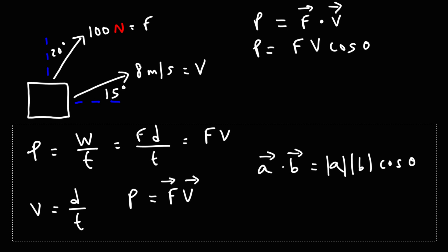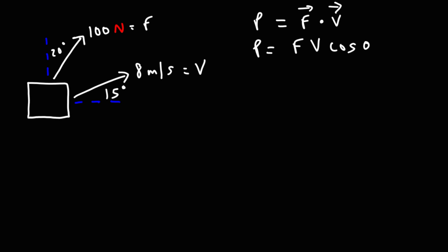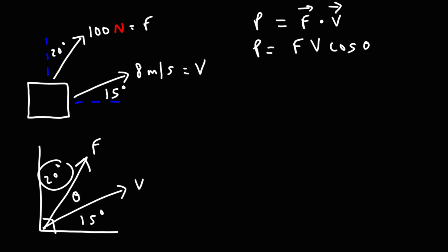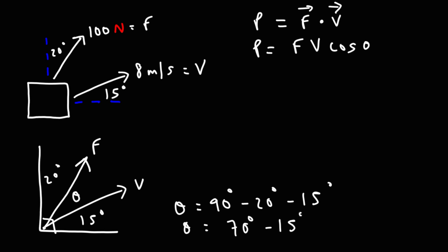We have the magnitudes of F and v, so we need to determine the angle between the two vectors. Here we have the horizontal and the vertical, which meet at right angles. The force vector is at 20 degrees from the vertical and the velocity vector is at 15 degrees above the horizontal. These three angles add up to 90 degrees, so theta equals 90 minus 20 minus 15. 90 minus 20 is 70, 70 minus 15 is 55. So theta is 55 degrees.